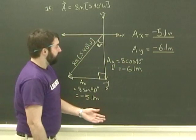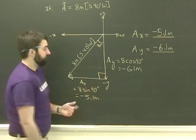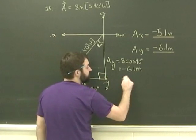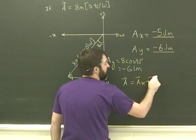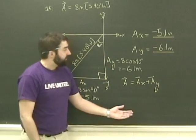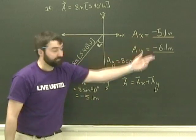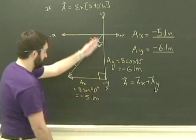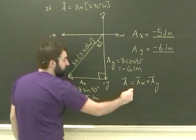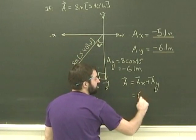To finish it off, we should just double check. We said that the original vector better be the sum of its two components. Does negative 5.1 plus negative 6.1 add up to 8? Hopefully it does. We have to, of course, use the Pythagorean theorem to check.